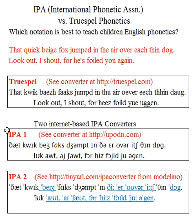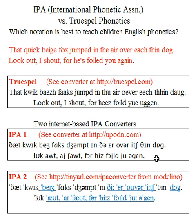Here is what IPA 1 would look like. This is the converter at uppodownuppodown.com. 'That quick beige fox jumped in the air over each thin dog. Look out, I shout, for he's foiled you again.'